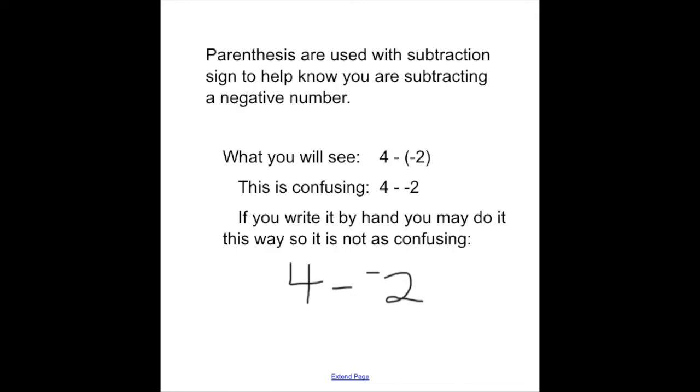Okay, now that you have everything, we're going to go over a few things before we start. You have noticed in our previous videos, we've used parentheses. Parentheses are used with a subtraction sign to help you know that you are subtracting a negative number. So this is what you're going to see: 4 minus, and then they're going to put parentheses to show that it's negative 2.